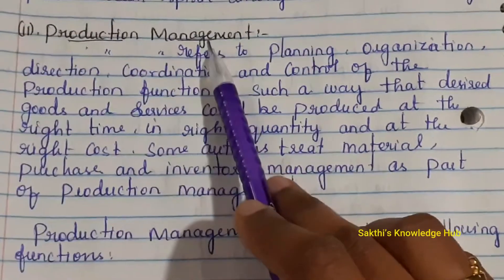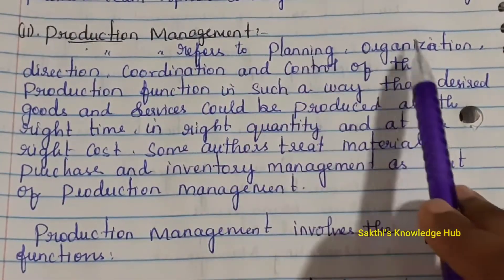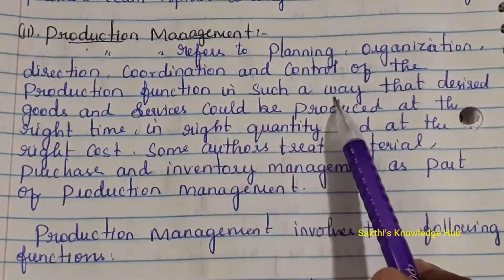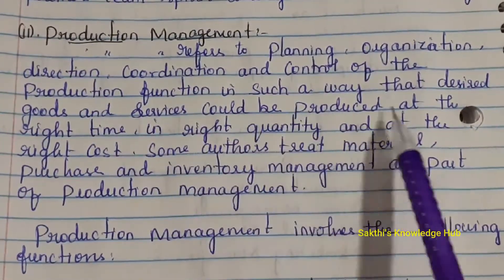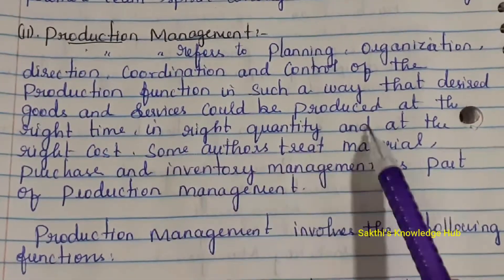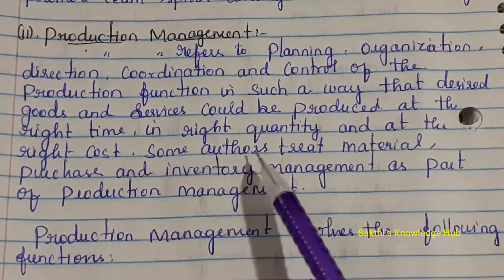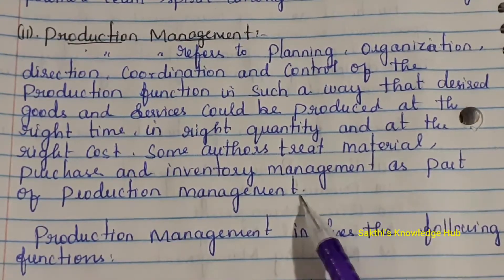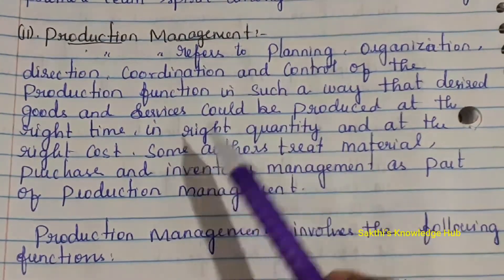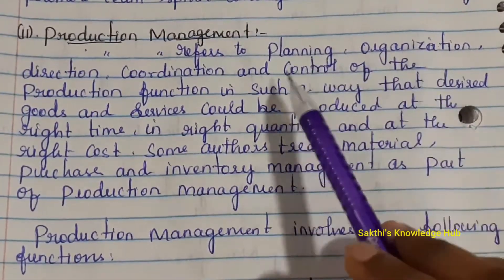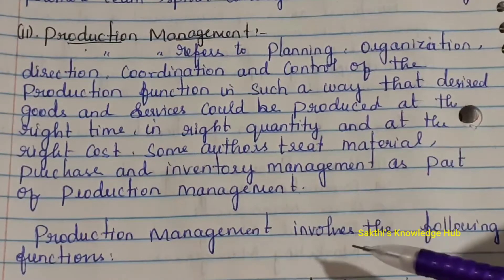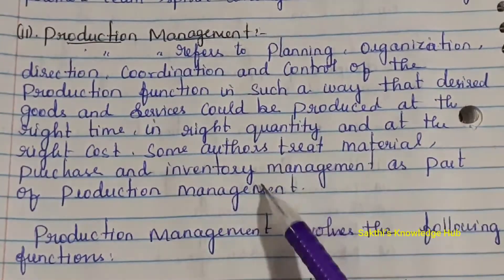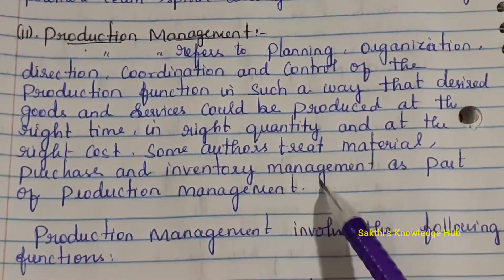The second is production management. Production management refers to planning, organization, directing, coordination, and control of the production function so that desired goods and services can be produced at the right time, in the right quantity, and at the right cost. Some authors treat materials, purchase, and inventory management as part of production management.